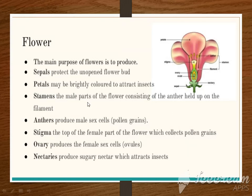Stamens are the male parts of the flower, consisting of an anther held up on the filament. So stamen is the male part, and its two components are the anther and the filament. The function of the anther is to produce the male sex cells, which are called pollen grains.